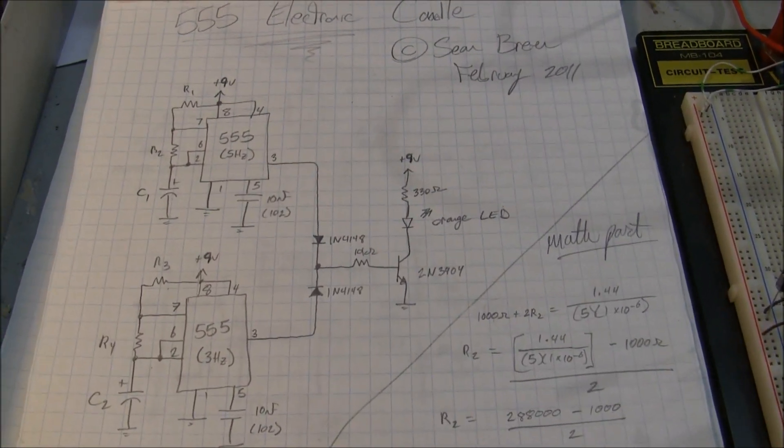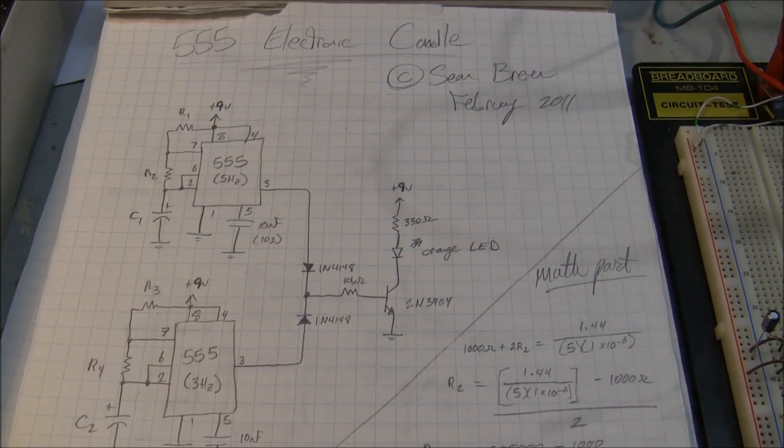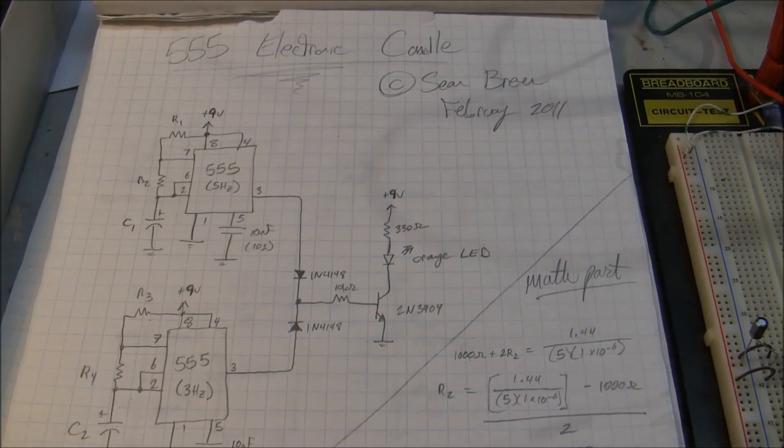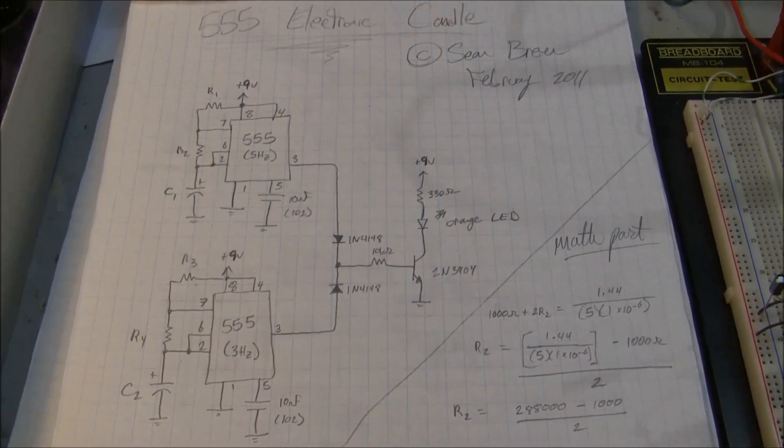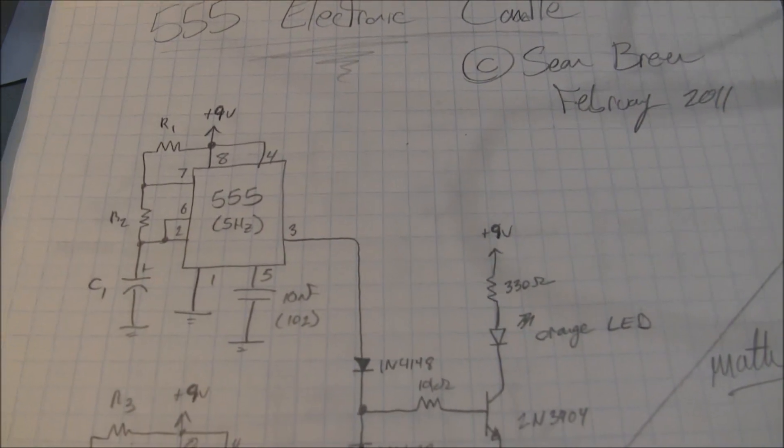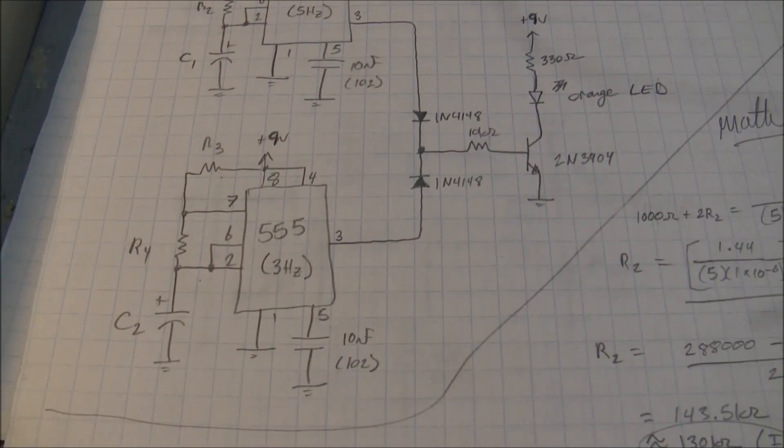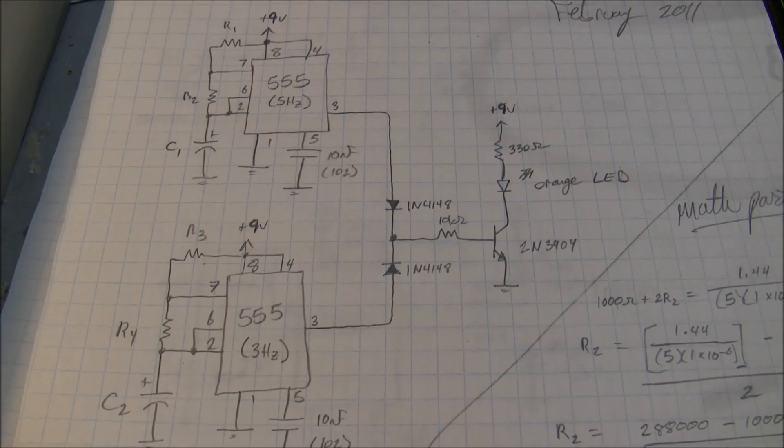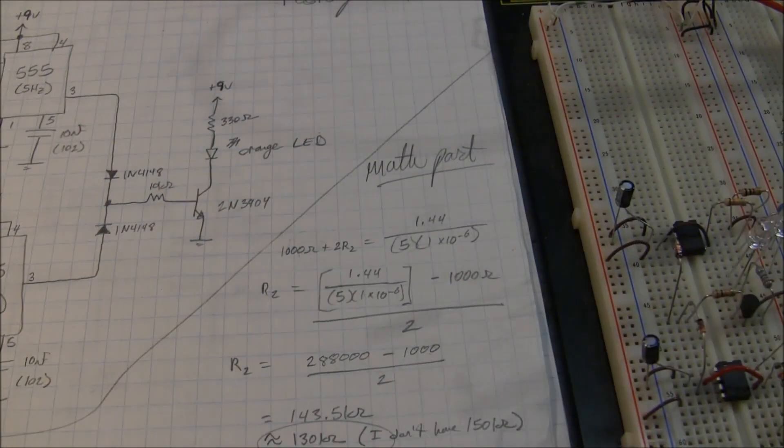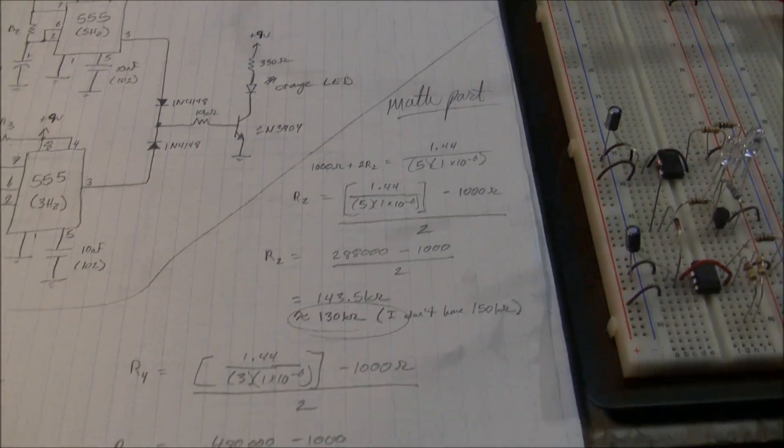I'm using two 555s. You could also use a 556, but I had more 555s laying around, so that's what I use. Pretty much I've got them both wired in the astable configuration, one operating at 5 Hertz and one operating at 3 Hertz. There's a little bit of my math here in the math part just to figure out the values to get the proper timings and whatnot.